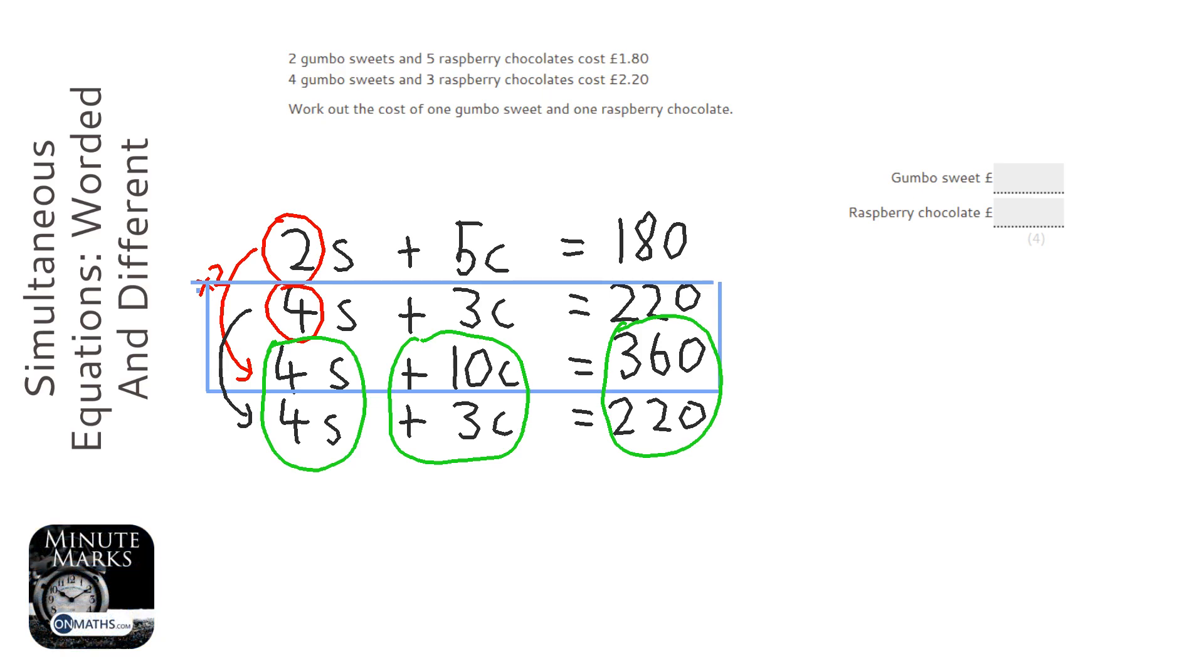So just remember that: same coefficient, same sign, subtract. If the signs are different—one's positive, one's negative—the D in different is the D in add. So if they're different you'd add them. But these are both the same, as we can see, so we're going to subtract them.